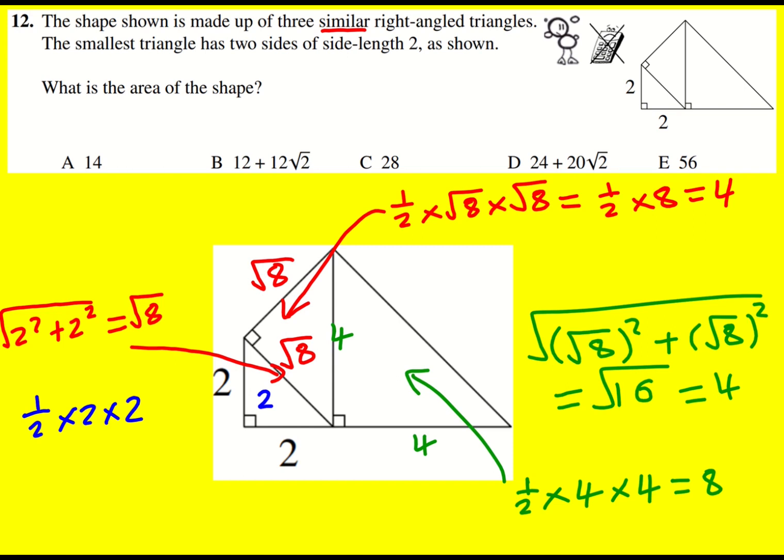So overall the area is going to be 2 plus 4 plus 8 which is 14.